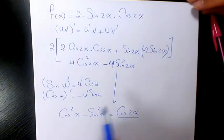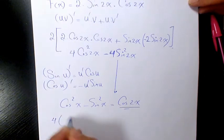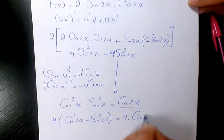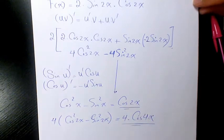So what we have here, if I factor 4, is going to be cosine squared 2x minus sine squared 2x. It means that it's going to be 4 times cosine 4x. So that's the final answer.